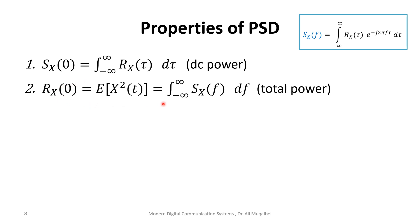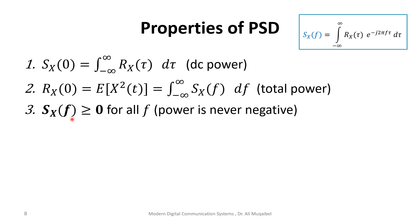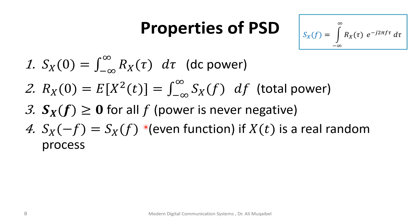Taking the area under the power spectral density gives the total power, which is consistent since integrating power spectral density yields total power — equivalent to the autocorrelation at τ = 0. The PSD is always a non-negative quantity, since we cannot have negative power. It is also an even function because, for real signals, the power at negative and positive frequencies is the same. Power is always real, non-negative, and even.